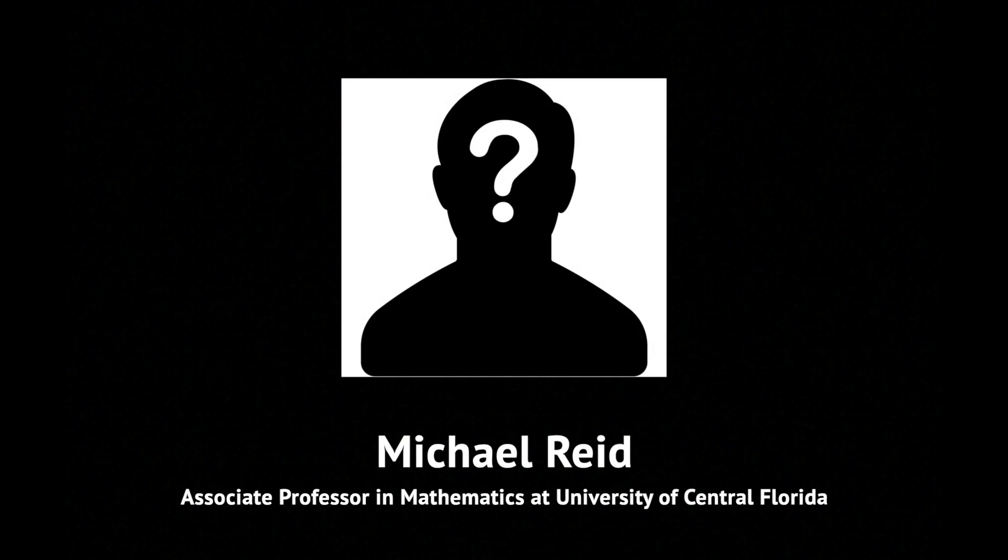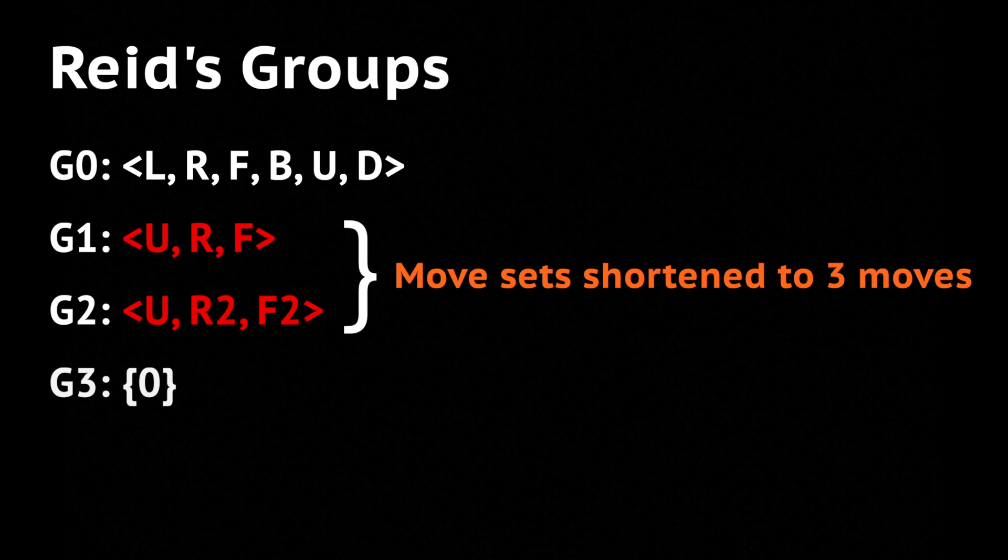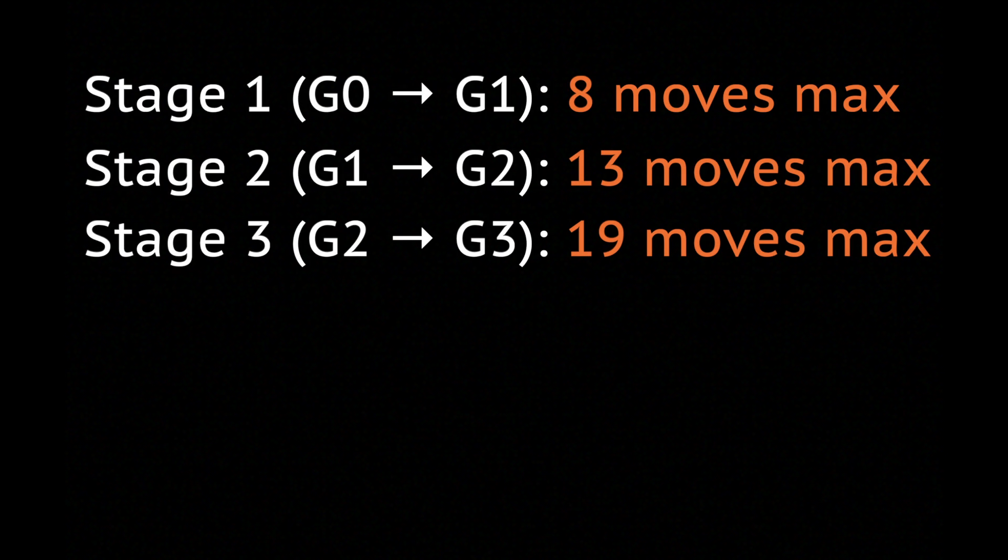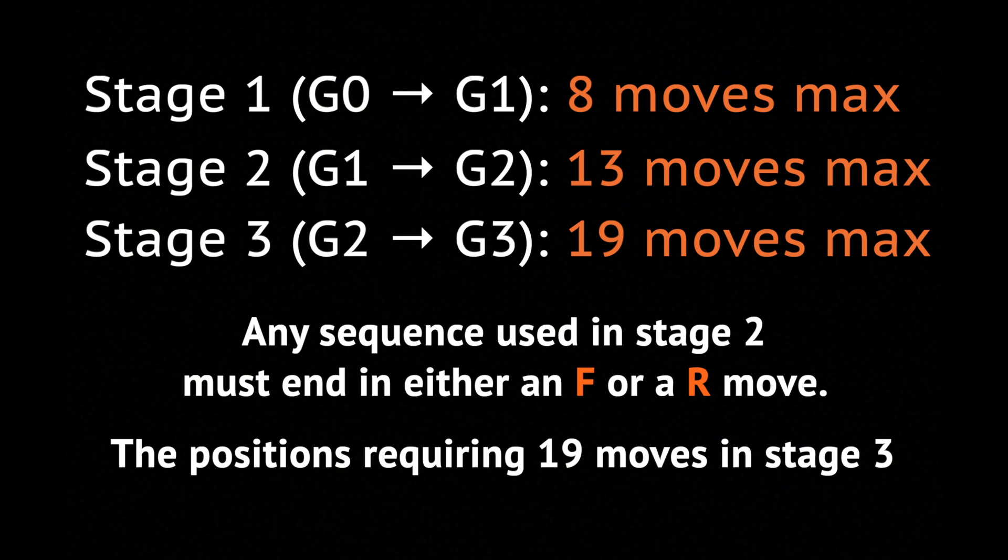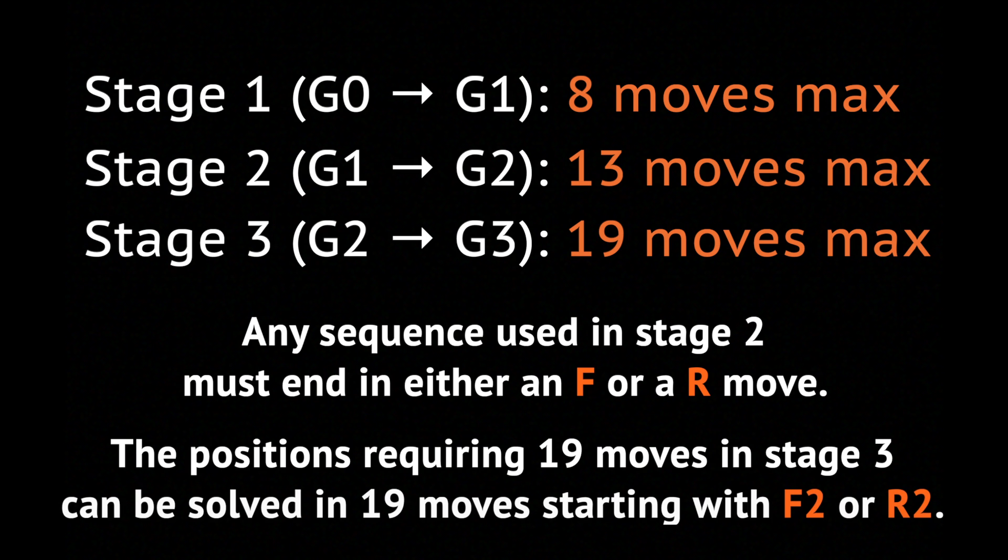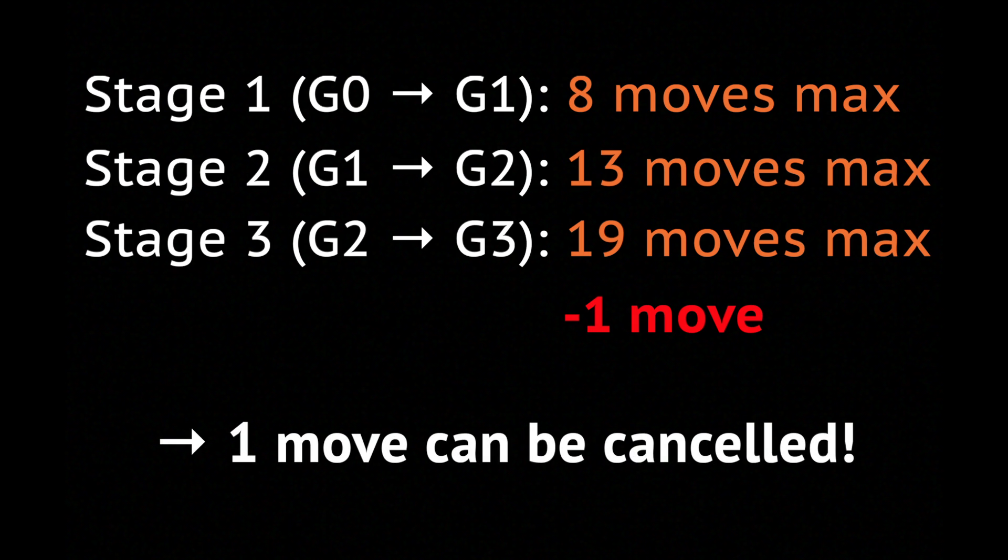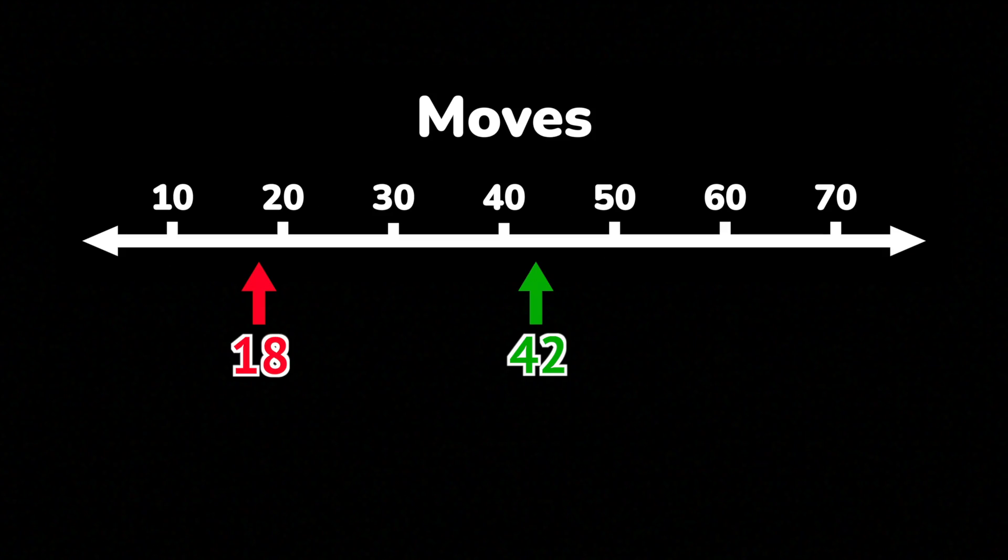Using a similar method, Michael Reid came up with his own groups later the same year. G0 stays unchanged, G1 and G2 are quite drastically changed to shorten their movesets, and G3 is the solved state. Advancing through stages 1, 2, and 3 takes at most 8, 13, and 19 moves, respectively. Additionally, Reid verified that any sequence of moves used in stage 2 must end in either an F or an R move. He also checked the positions requiring 19 moves in stage 3, only 24 of such cases in total, finding that they may be solved in 19 turns starting in either F2 or R2. Thus, one move is cancelled between stages 2 and 3, when stage 3 requires 19 moves. Reid reduced the upper bound of God's number down to 39 moves.